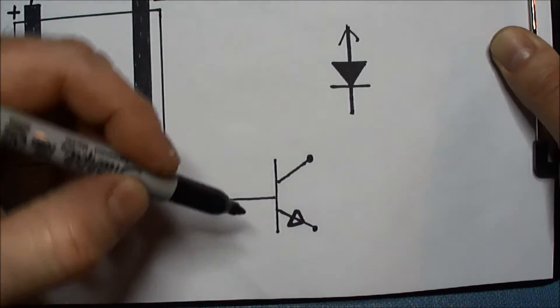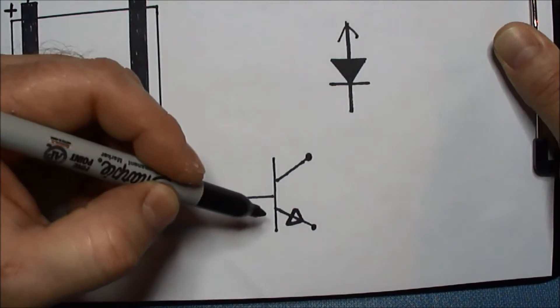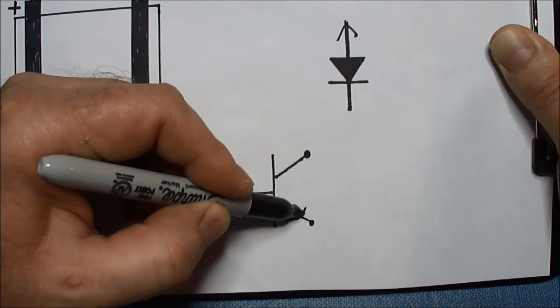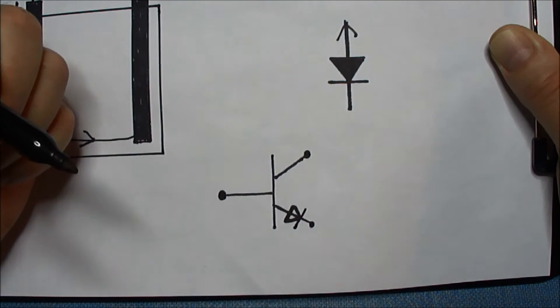And the same holds true with the transistor diagrams, where you see the arrow here. There should be a valve seat right there.